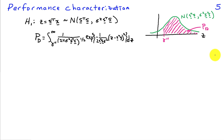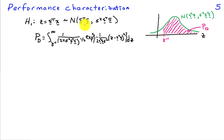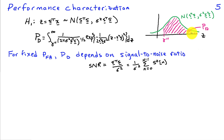Let's also characterize performance by looking at the probability of detection. We need the distribution of S^T X under H1. Under H1, the random variable Z equals S^T X is a normal random variable with mean S^T S and variance sigma squared S^T S. The variance stays the same under H0 and H1 — it's just that under H0 we had zero mean, and under H1 we have mean S^T S. The probability of detection is the area from gamma double prime to infinity under this density, shown in pink, and can also be evaluated with a computer.